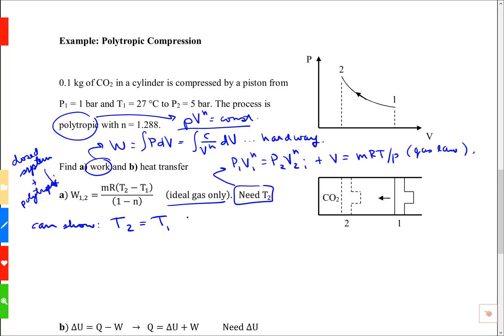T2 is T1 times the ratio of pressure P2 over P1 raised to a power n minus 1 divided by n. All that is in the exponent.